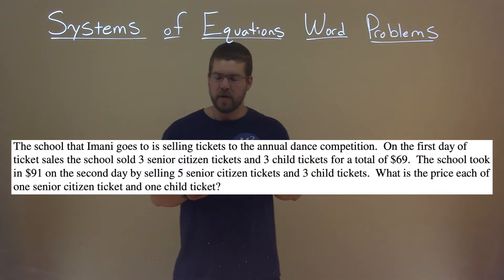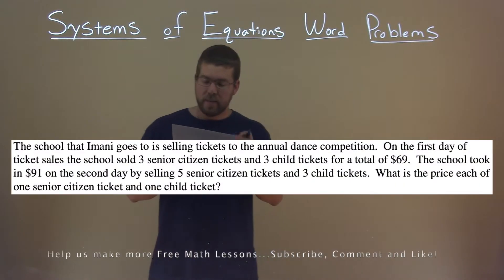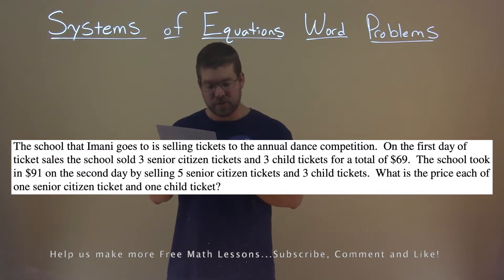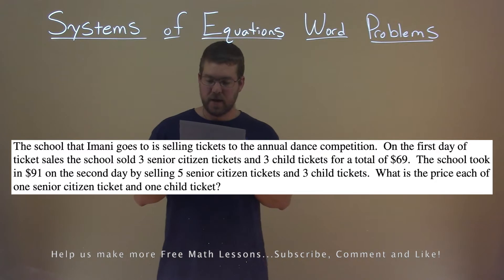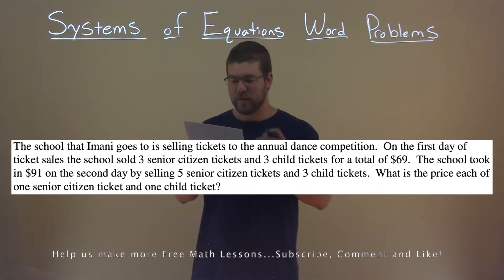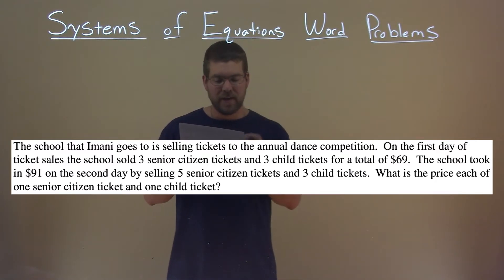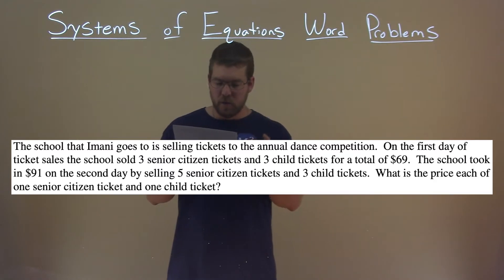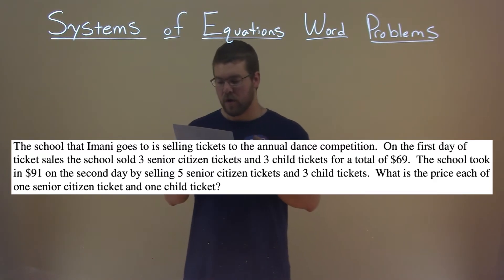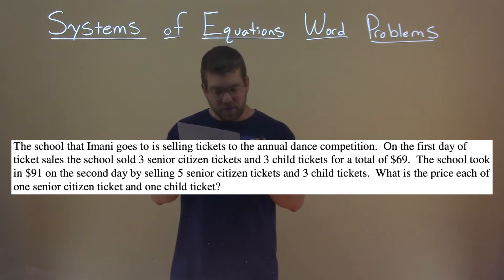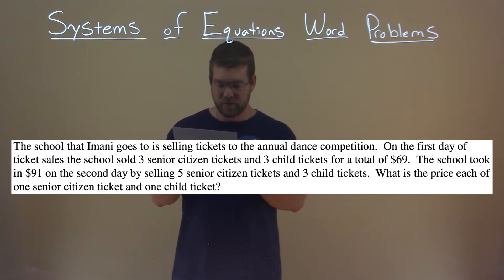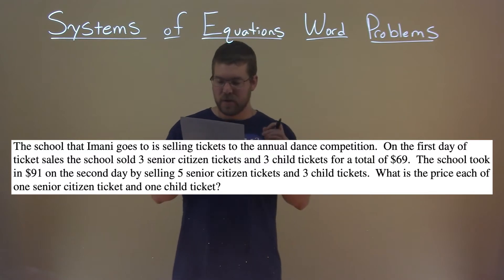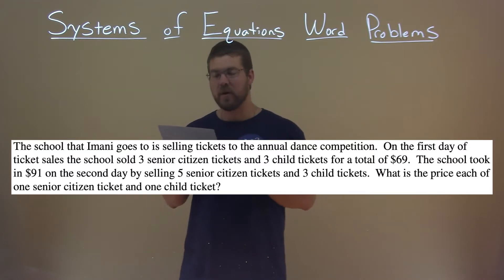We're given this problem right here. The school that Imani goes to is selling tickets to the annual dance competition. On the first day of ticket sales, the school sold three senior citizen tickets and three child tickets for a total of $69. The school took $91 on the second day by selling five senior citizen tickets and three child tickets. What is the price of one senior citizen ticket and one child ticket?